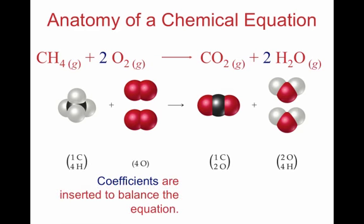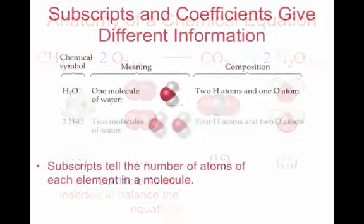The coefficients in a chemical equation help us to balance the chemical equation. Remember, the law of conservation of matter says we can neither create nor destroy matter, so if it shows up on one side, it has to show up on the other side in the exact same amount. And we can make that happen by changing the coefficients.